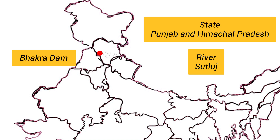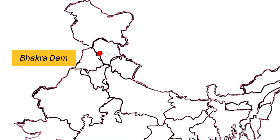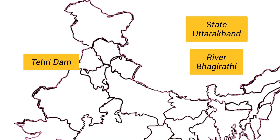The next dam is Bhakra Nangal Dam. It is located in the states of Himachal Pradesh and Punjab. It is the largest dam in India. It is on the river Sutlej.